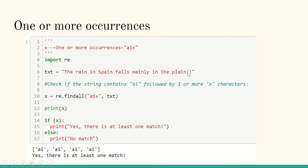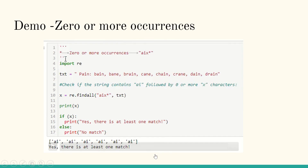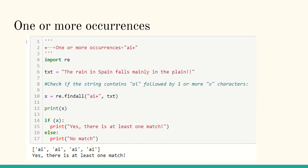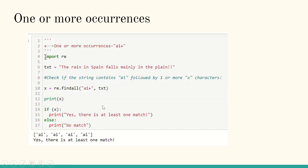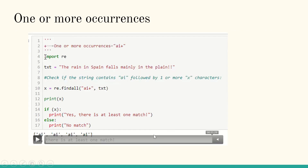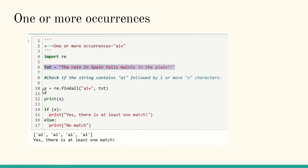Using the pattern 'ai+' — the plus sign means one or more occurrences — we get four matches: rain, spain, mainly, and plane. Remember: star gives zero or more occurrences (can even be zero), while plus gives one or more occurrences. The demo code imports re, sets the text, and uses re.findall('ai+', text). Running it confirms four matches.